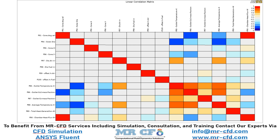In this project, the RNG-K-Epsilon model is exploited to solve the turbulent fluid equations. The energy equation is enabled to calculate the temperature change and model the heat transfer. Also, the species transport model along with the volumetric reaction option has been activated to simulate the combustion process inside the cylindrical combustion chamber.